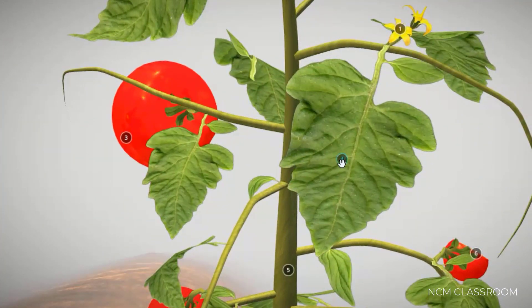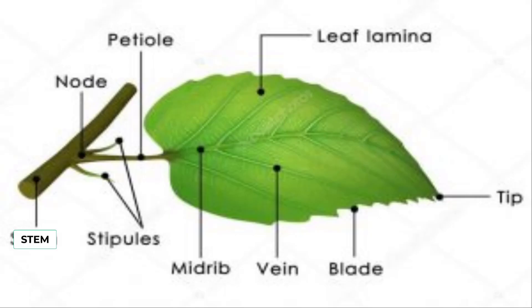Now we will see the structure of leaf. This is the most important organ in the plant. It helps in the preparation of food. We will see the structure here: the leaf is attached to the stem with the help of petiole, and the wide part of the leaf is called leaf lamina.